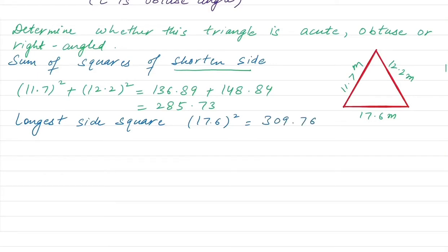Now we can clearly see that 309.76 is greater than 285.73. So we can write 17.6² > 11.7² + 12.2². This means C² > A² + B². Therefore, this is an obtuse angle.